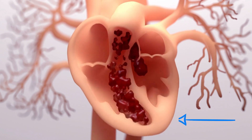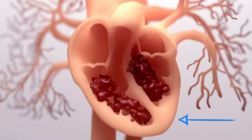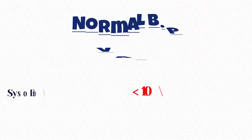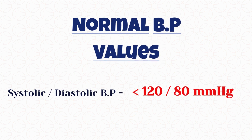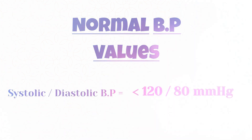The diastolic reading, or the bottom number, is the pressure in the arteries when the heart rests between beats. This is the time when the heart fills with blood and gets oxygen — the pressure of blood when the ventricles are at rest. A normal blood pressure level is less than 120 over 80 millimeters of mercury.